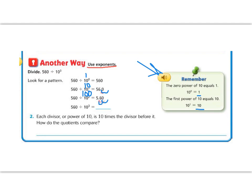And our last one here, 560 divided by 10 to the power of 3, that means 1,000 because it's 10 times 10 times 10. It means that we're going to move our decimal three places to the right. So if we had 560, our decimal is going to go 1, 2, 3. And our answer is going to be 0.560.